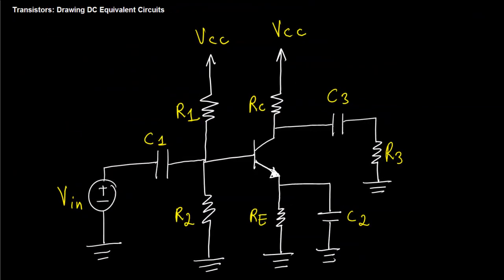Let's say you have this transistor circuit and you want to find its DC equivalent. The steps to follow are that you replace any capacitor with an open circuit and any inductor with a short circuit. Now in this case I don't have any inductors, but I do have three capacitors C1, C2, and C3, so I'm going to replace those with open circuits.